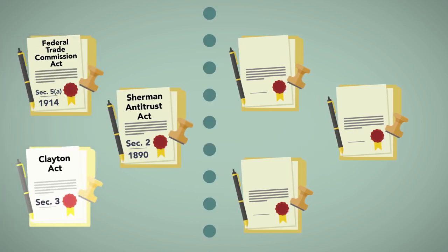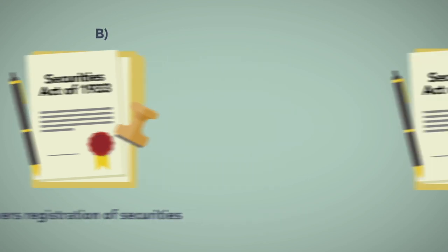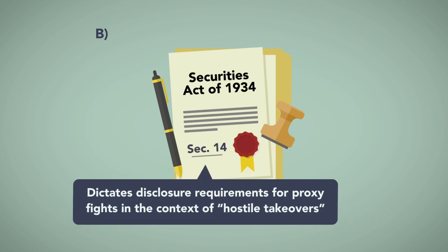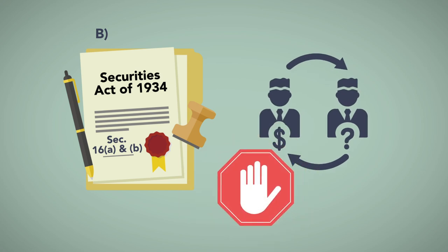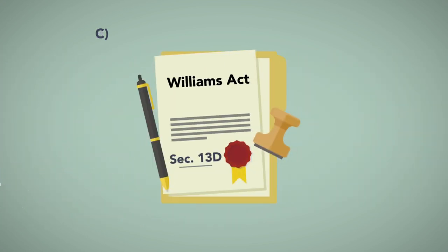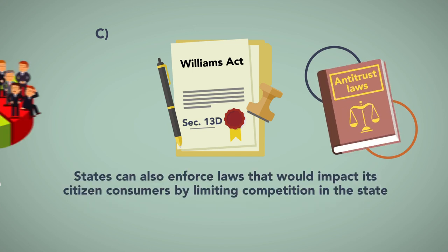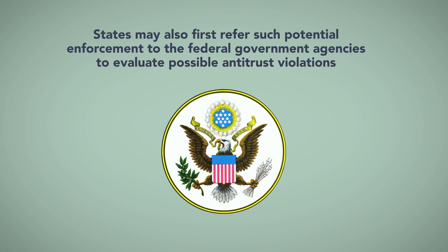These secondary statutes that may be triggered by a proposed merger or acquisition include: a) the Securities Act of 1933, which covers registration of securities; b) the Securities Exchange Act of 1934, which established the SEC and regulates broker-dealers. Section 14 of the 1934 Act dictates disclosure requirements for proxy fights in the context of hostile takeovers. Similarly, Sections 16(a) and (b) of the 1934 Act, which define non-public information and penalties for insider trading of securities, may be raised in the context of both hostile and non-hostile acquisitions. c) Finally, the Williams Act, Section 13(d), regulates tender offers. While the federal government has primary jurisdiction in most merger activity due to the Interstate Commerce Clause of the Constitution, in the absence of federal prosecution, states' antitrust laws can block a merger. States can also enforce laws that would impact their citizen consumers by limiting competition in the state. States may also refer such potential enforcement to the federal government agencies to evaluate possible antitrust violations.